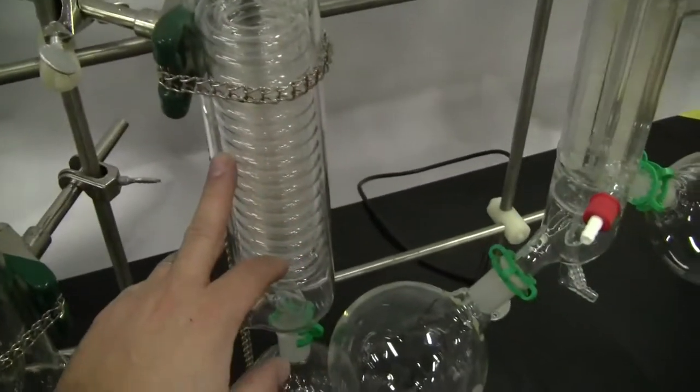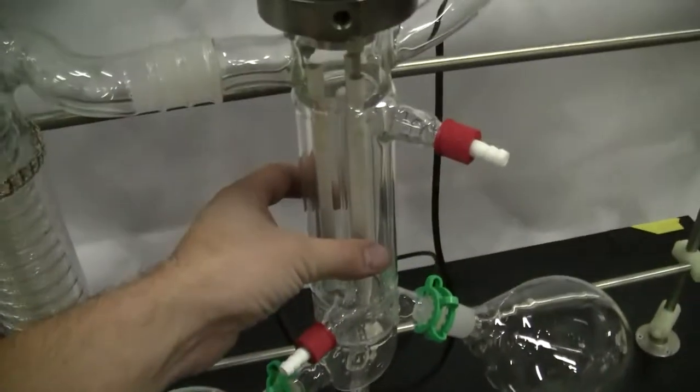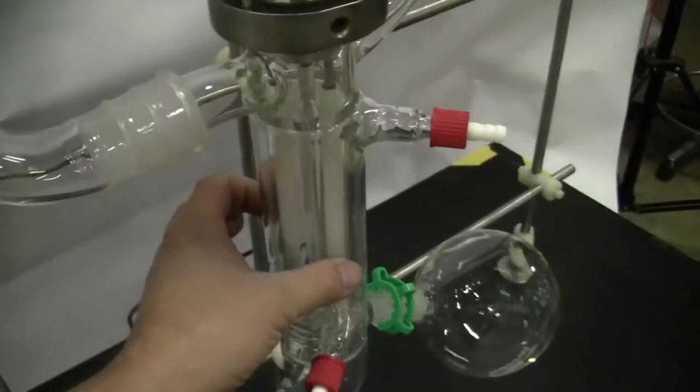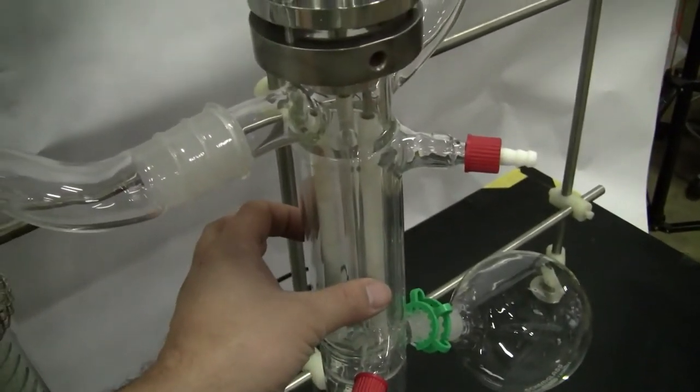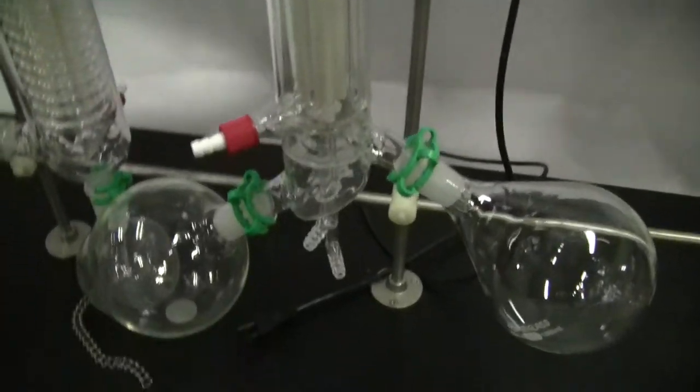First condenser, second condenser. Receiving flask on the bottom. The diameter here is 2 inch. The system looks to be in excellent condition.